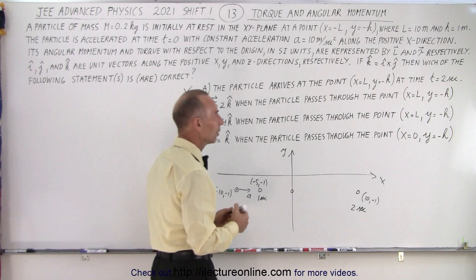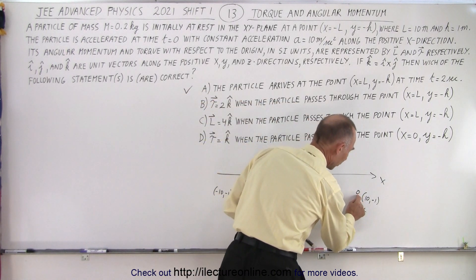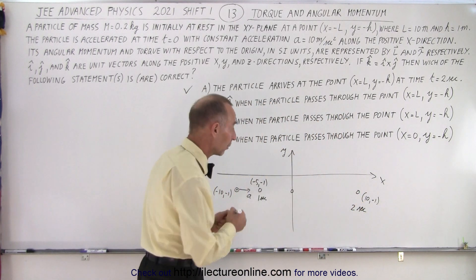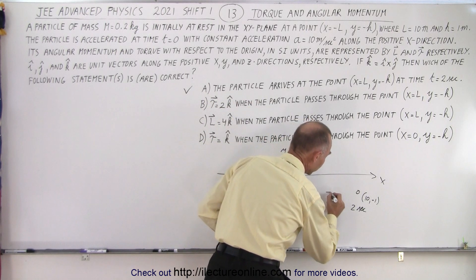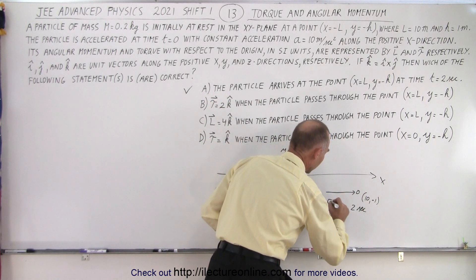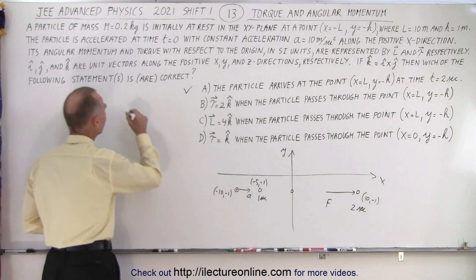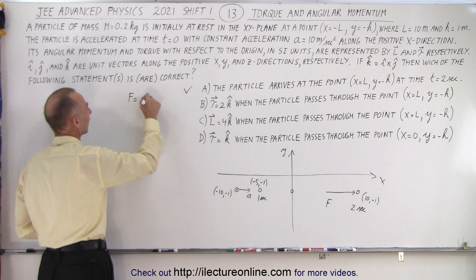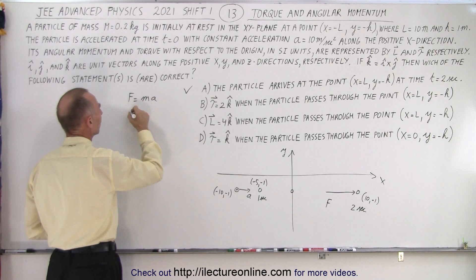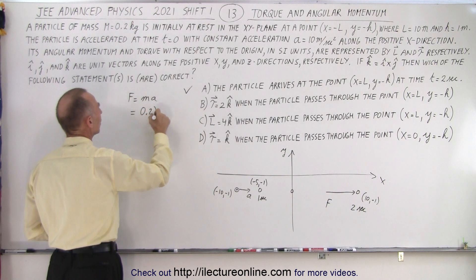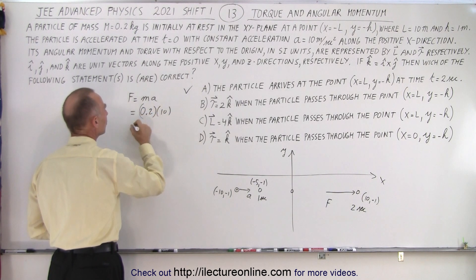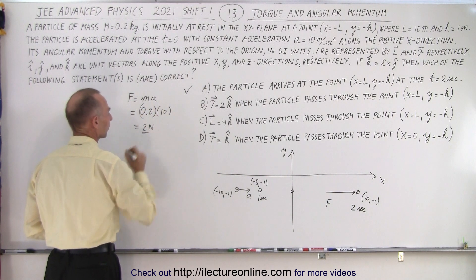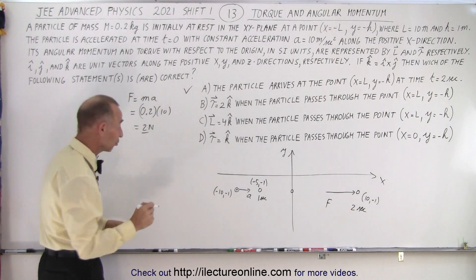How about b? The torque is 2k when the particle passes through the point x equals l, y equals minus h. Again, at that point, what is the torque? Now remember that the particle is undergoing a force, and we know that f equals ma. And we're given the mass and we're given acceleration. The mass is 0.2, the acceleration is 10, which means the force is 2 newtons.